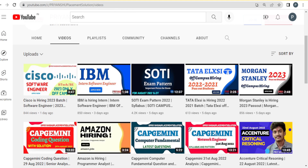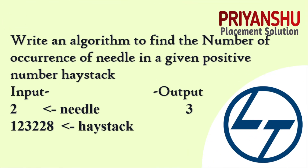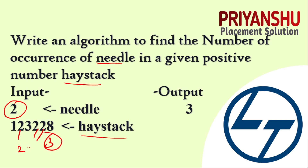The next question is also easy. It says: write an algorithm to find the number of occurrences of a needle in a given positive number haystack. So we have one needle and we need to find how many times it appears in the haystack number. For example, the digit 2 appears three times in a number, so the output is 3.